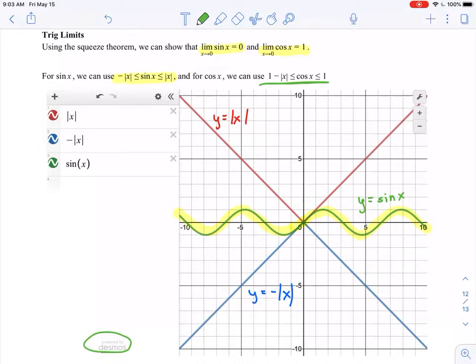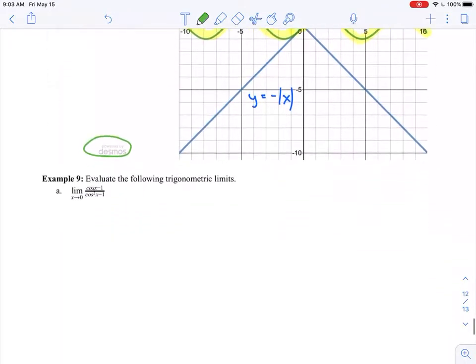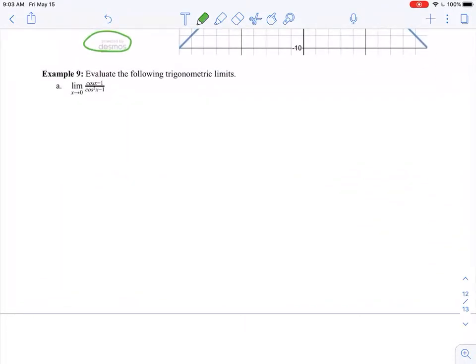Right now, we're only going to be talking about the limit as x approaches 0 of sine of x and cosine of x. We're not going to worry about any other x values or any other trig functions. So we're going to look at just one quick example here.